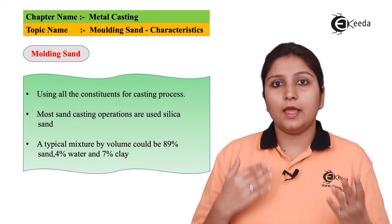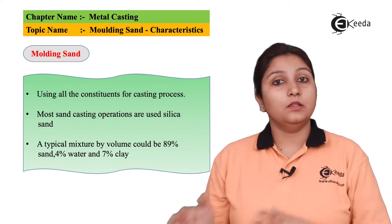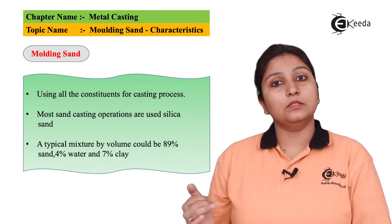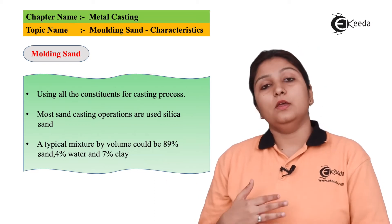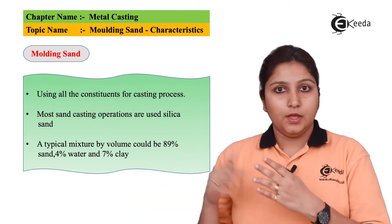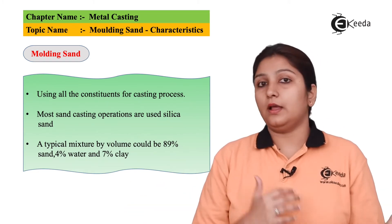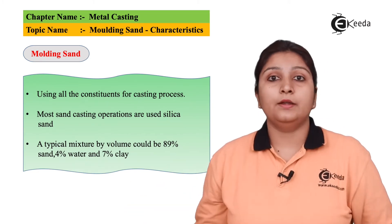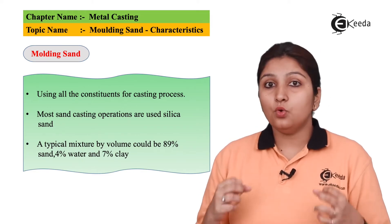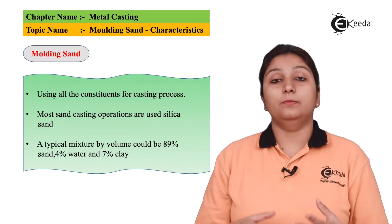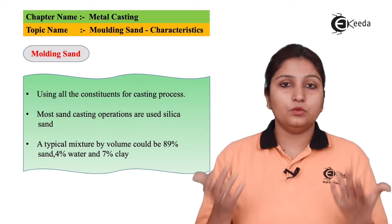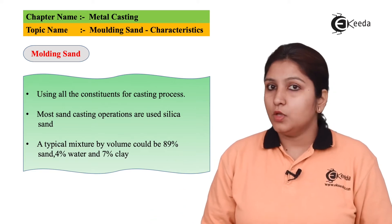Molding sand is normal sand along with other mixtures like clay, water, etc. These are all mixed together, properly conditioned in the proper constituent ratios, and then used in the casting process. It fills the entire mold pattern except the cavity, helping to hold the cavity and the object in place. In this way, sand plays a very important role — without sand, casting cannot be done.